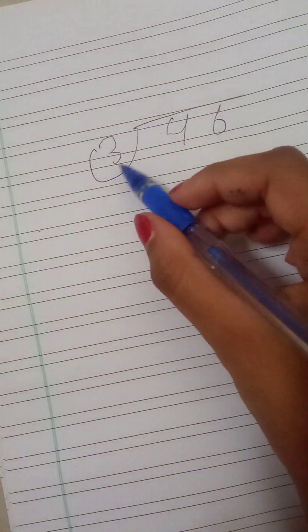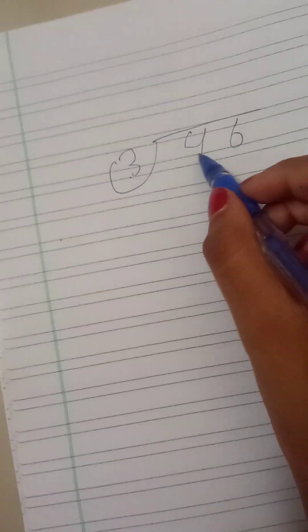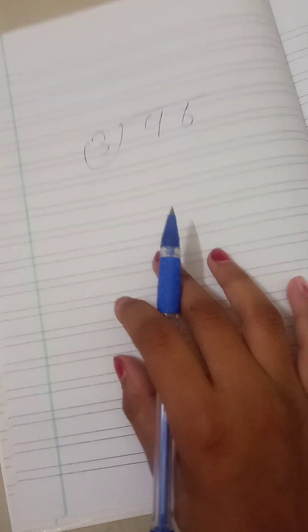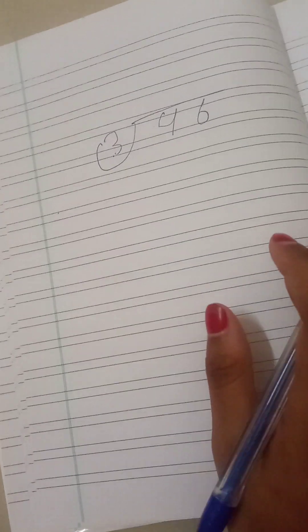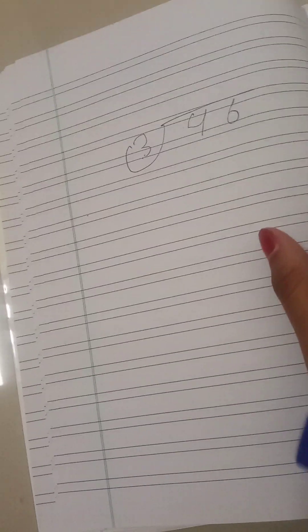Now, 3 and 4. But 4 doesn't come into 3 tables. Don't worry, we're going to use the most closest number to 4.